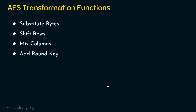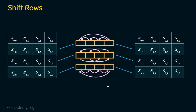We are done with sub bytes. Let's move on to shift rows, the second transformation function. Before entering shift rows, we have the input state array S[0][0] to S[3][3] — first row, second row, third row, and fourth row. The first row remains untouched: S[0][0], S[0][1], S[0][2], S[0][3] remain as such. There is no shifting operation performed on the first row.